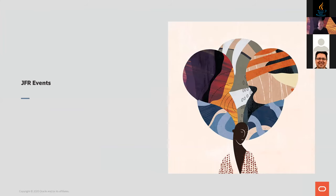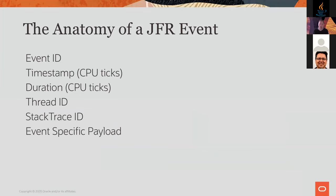Events are very central to how Flight Recorder works. This is basically the anatomy of a JFR event. An event is a small blob of data with a few fields. The first one is an event ID — the unique identifier for this event, helpful for finding it later. An event has a timestamp: when did this event actually happen?